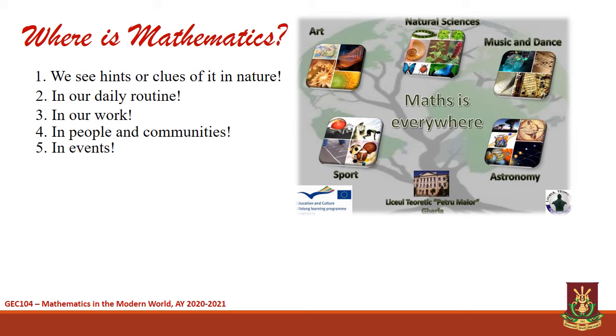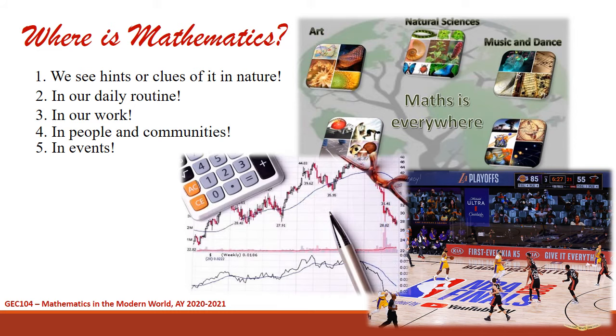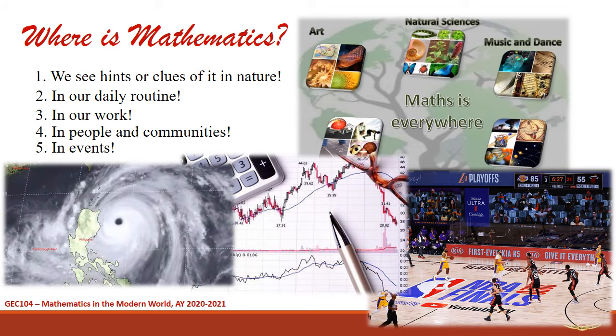Mathematics can also be seen in different events like in sports. We also have mathematics that helps in creating arts, music, and dance. It helps us understand past and present events so that we may be able to predict possible outcomes. This is particularly important in preventing calamities.